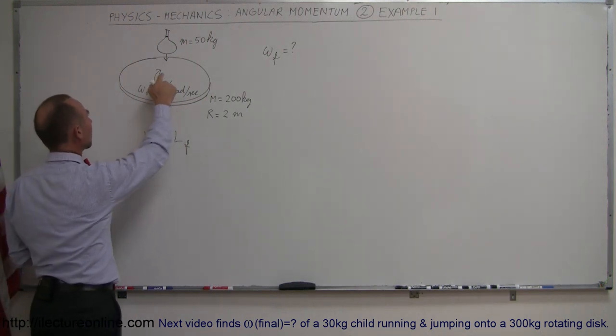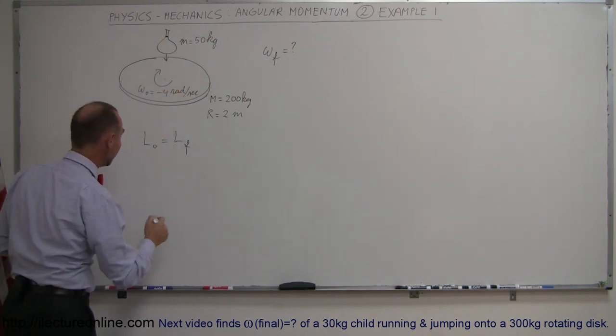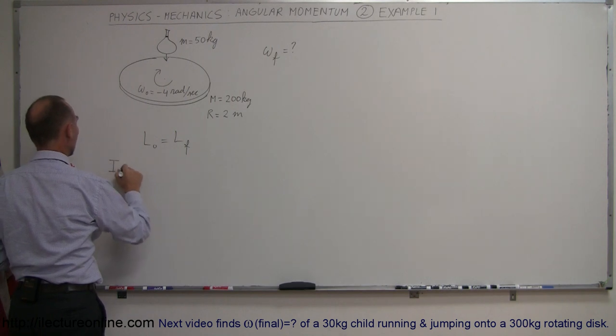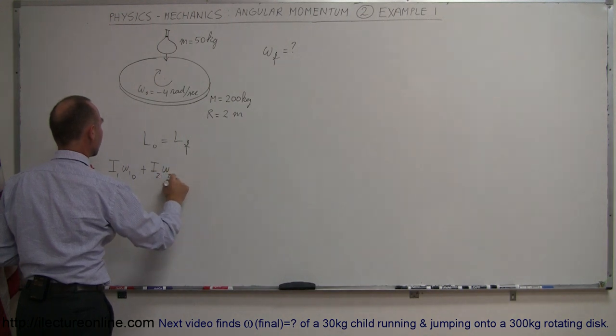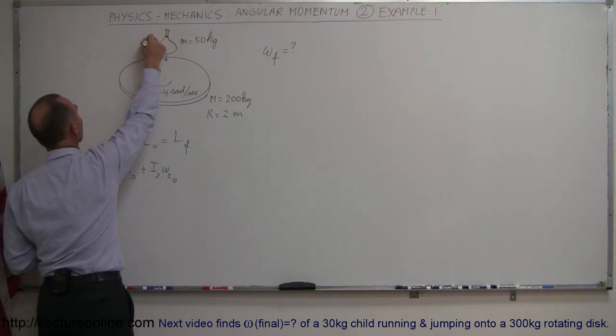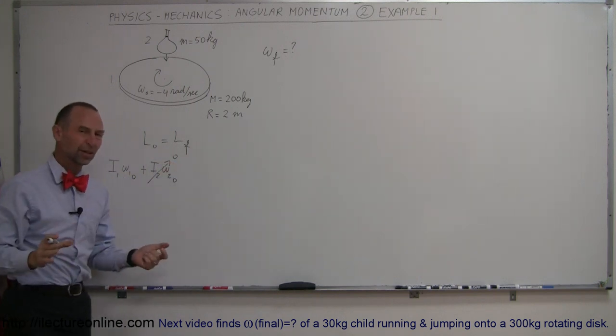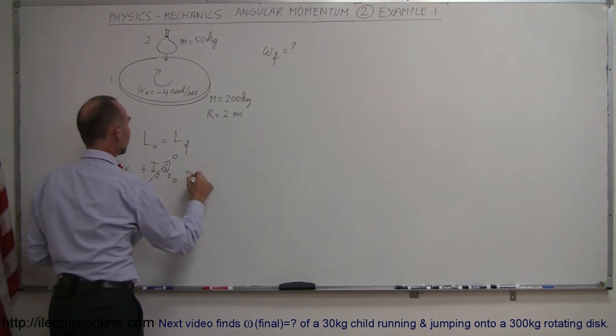Notice that only one of the two objects has angular momentum because this one is being dropped straight down. So that means we have I₁ω₁ initial plus I₂ω₂ initial. And if this is the second object and this is the first object, then this of course immediately goes to zero because it doesn't have any angular momentum.